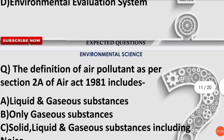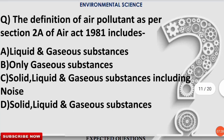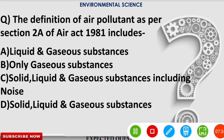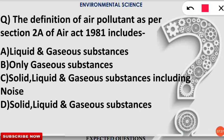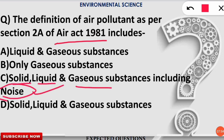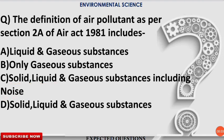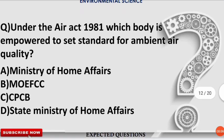The next question: the definition of air pollutant as per Section 2A of the Air Act 1981 includes which substances? The correct option is C — solid, liquid, and gaseous substances including noise are all covered under the Air Act 1981 as the definition of air pollutant.